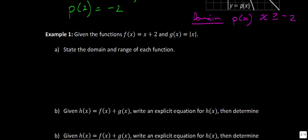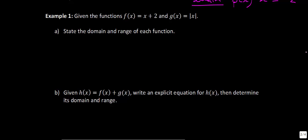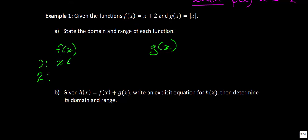Example 1: Given f(x) = x + 2 and g(x) = |x|, state the domain and range of each. For f(x), we have a linear function, so the domain and range are both all real numbers — it goes infinitely left, right, up, and down.